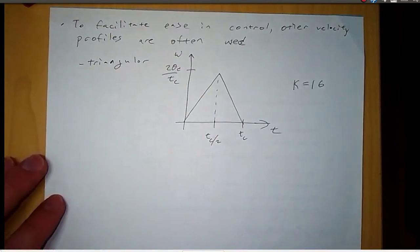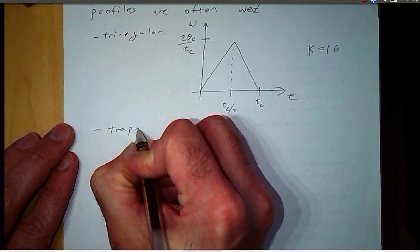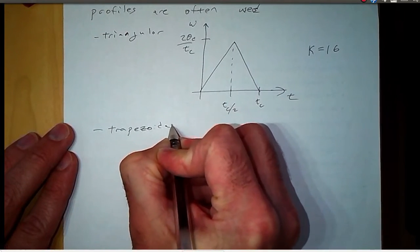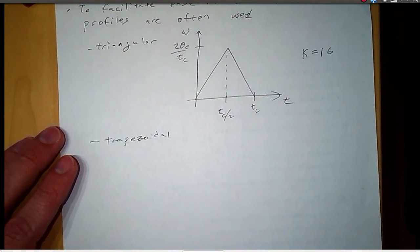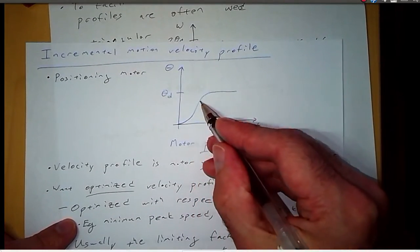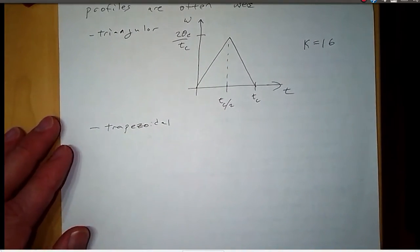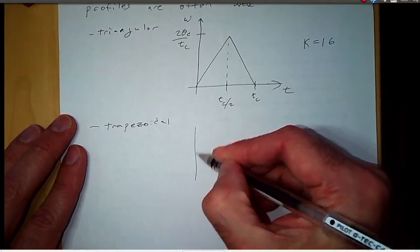Another profile that's possible is trapezoidal. And we'll look extensively at the trapezoidal velocity profile. In fact, that's the velocity profile that would make a shape approximately like this for position. So here's what the trapezoidal velocity profile looks like. Again, we have angular velocity on the vertical axis.